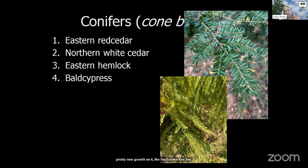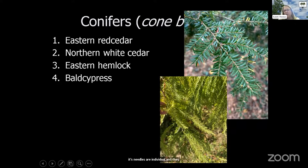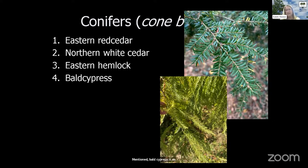Looking at our single needles, we have eastern hemlock — a really important tree of our cove forest ecosystems, though we worry for it greatly with the hemlock woolly adelgid. Its needles are individual, with one needle attached to the twig, singly attached. The same for bald cypress, with single needles attached to the twig. Note on bald cypress: while everything else here is evergreen, bald cypress is an exception — it is our deciduous conifer in the state. It doesn't have needles right now; it's just getting ready to grow those needles for spring.